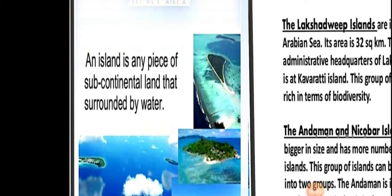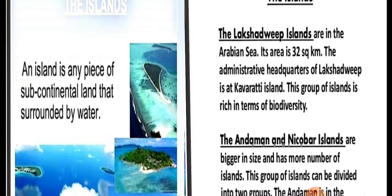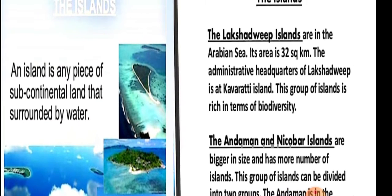First of all, we will know what is an island. An island is any piece of subcontinental land that is surrounded by water. Any major land that is surrounded by water from all four sides is known as an island.